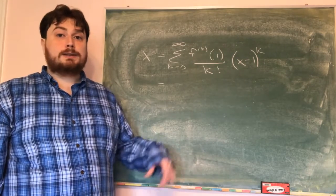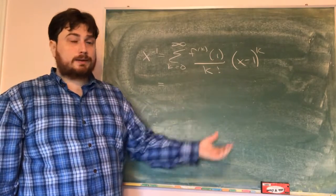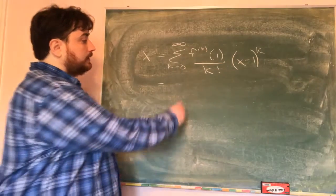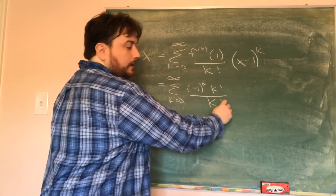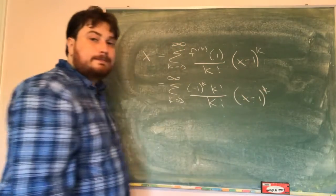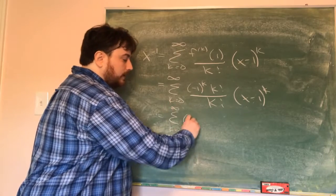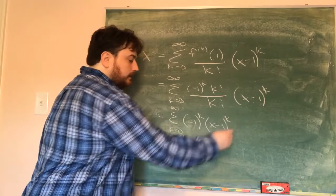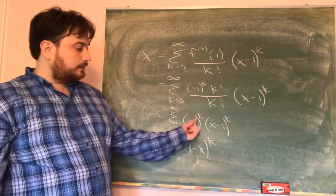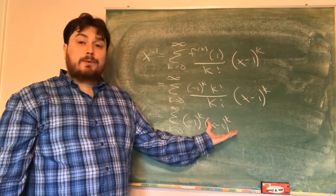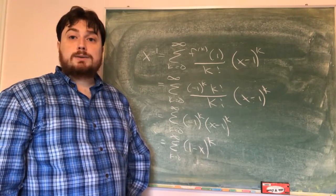Going back to finding our Taylor series for x to the negative 1, by definition it's the sum from 0 to infinity of the k-th derivative at our center 1, over k factorial, times x minus 1 to the k. Plugging in what we found, we get the sum from 0 to infinity of negative 1 to the k times k factorial, divided by k factorial, times x minus 1 to the k. The k factorials cancel, giving the sum of negative 1 to the k times x minus 1 to the k. Or equivalently, the sum of 1 minus x to the k, since negative 1 times x minus 1 equals 1 minus x.